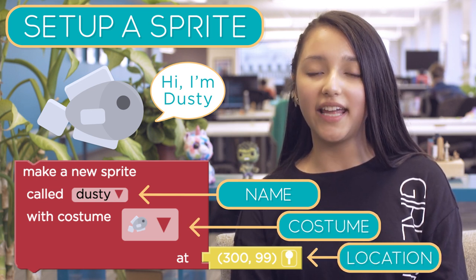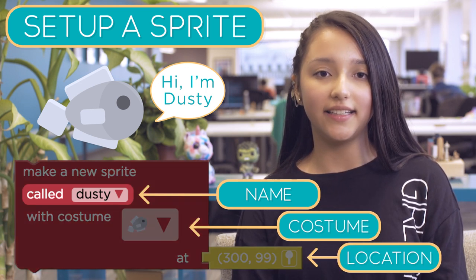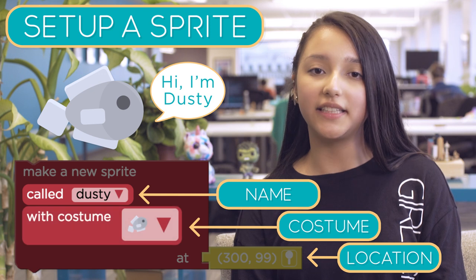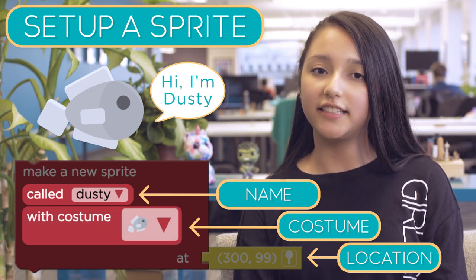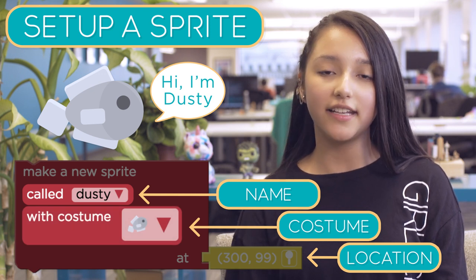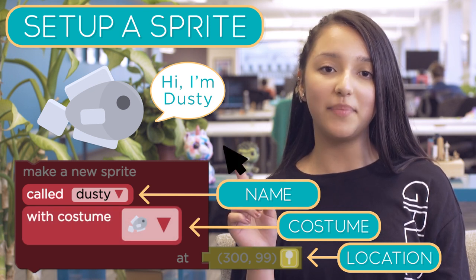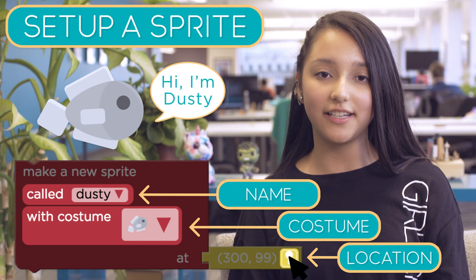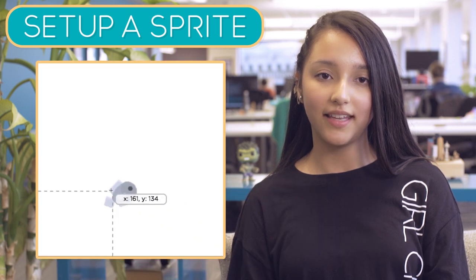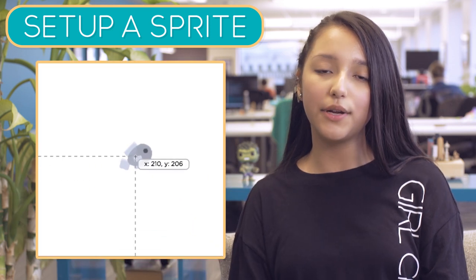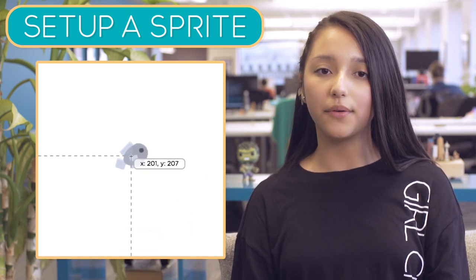This sprite is named Dusty, and the costume is a fish. If you want to change Dusty's location, you can click the pin in the Location block, and then click where you want Dusty to go.